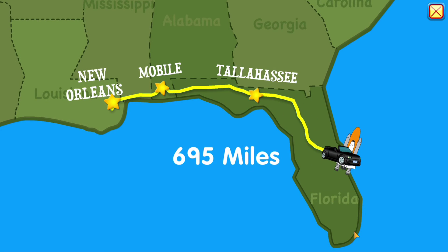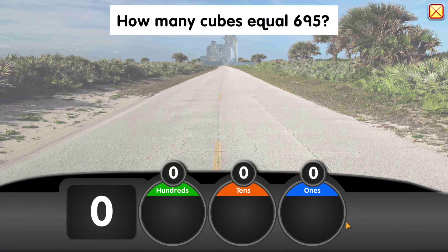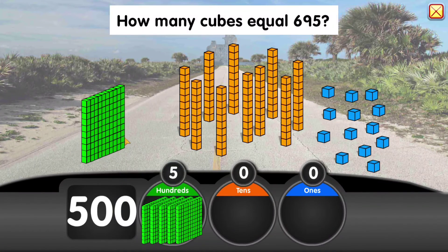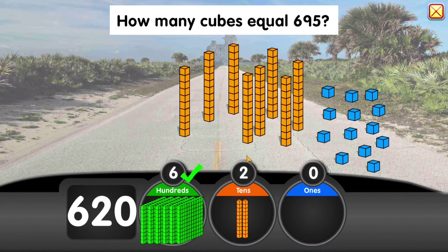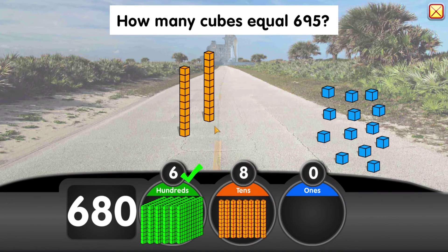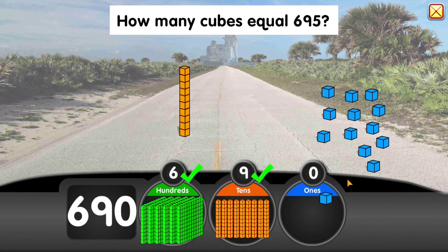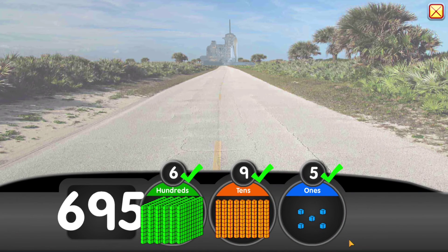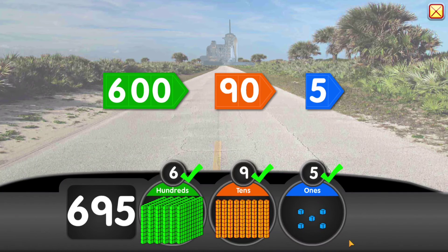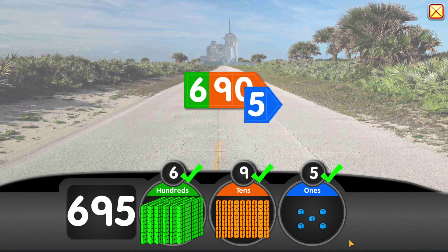We've driven 695 miles. How many cubes equal 695? 600 plus 90 plus 5 equals 695.